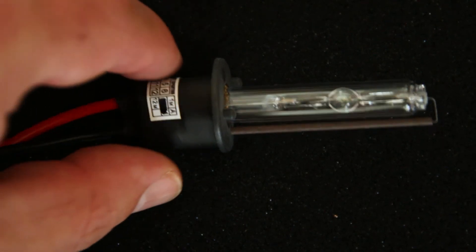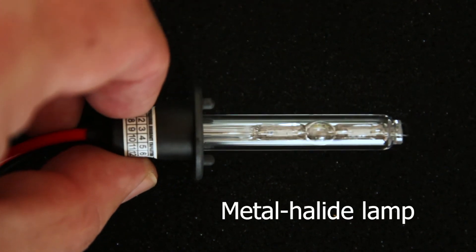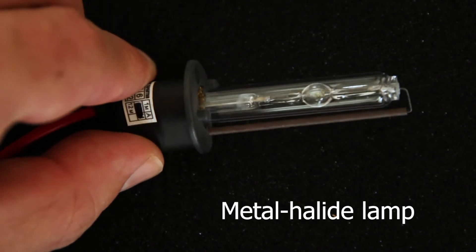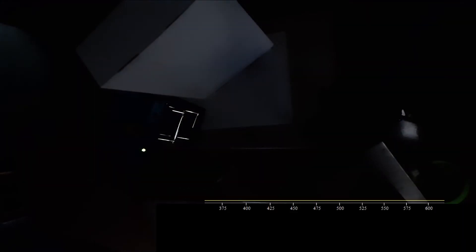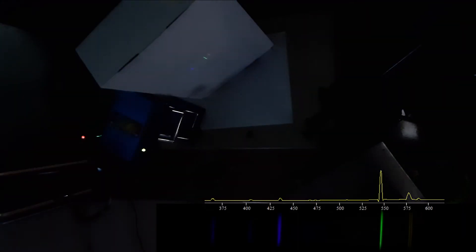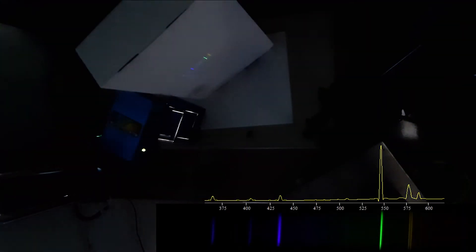Next up is gas discharge lamp, typically used in car headlights. We used to call them xenon lamps, but in fact they are metal halide lamps. In contrast to incandescent, where light produced by hot body, gas discharge lamps produce light from glowing plasma.